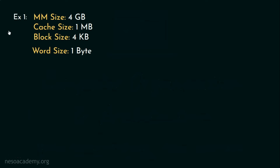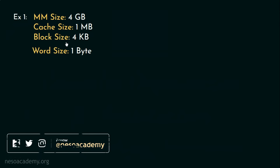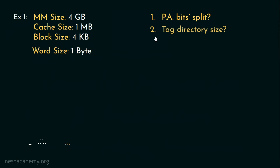Consider example number 1. Here, main memory size is given as 4GB, cache size is 1MB, block size is 4KB and word size is 1B. They are asking us about the PA bit split — how many bits are going to be there for the physical address, how many will be used for the tag bits, how many are for the line number and the block offset. Also, they are asking us about the tag directory size. We will solve them one after the other.